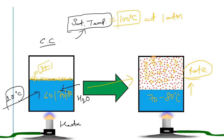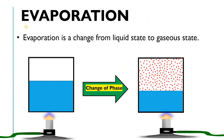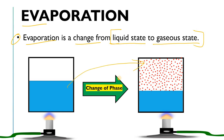This process is evaporation. Evaporation is the change from liquid state to gaseous state, and the liquid temperature must be less than the saturation temperature at that pressure. That is the key point about evaporation.